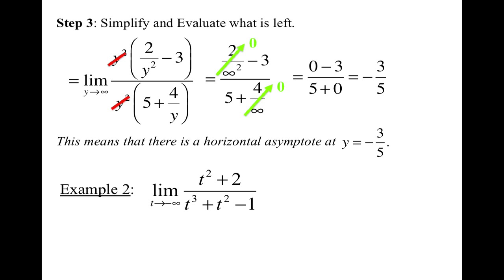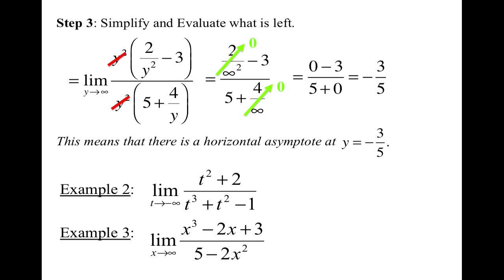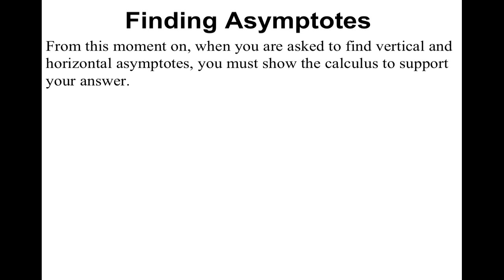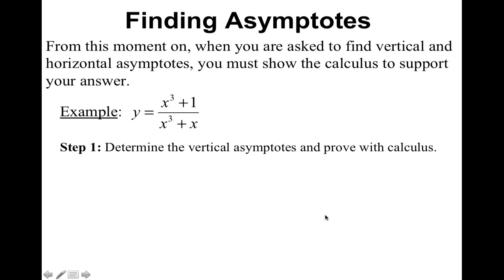Go ahead and pause the video and try examples two and three on your own. For example two, you should have gotten 0 and negative infinity. If you are confused or have questions on how these answers came about, you can either post on Edmodo or ask me tomorrow. From this moment on, when you are asked to find vertical and horizontal asymptotes, you must show the calculus to support your answer.